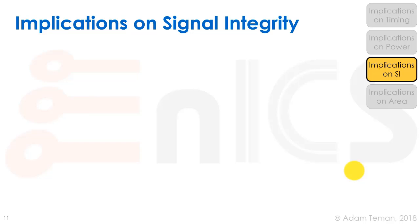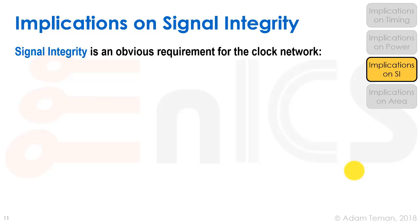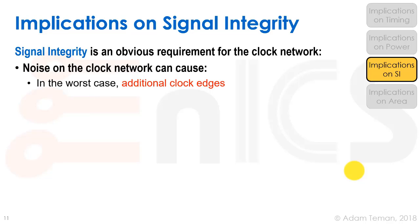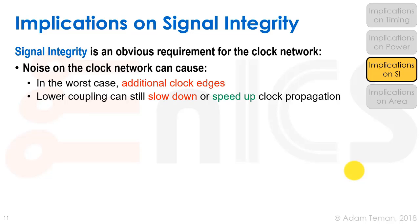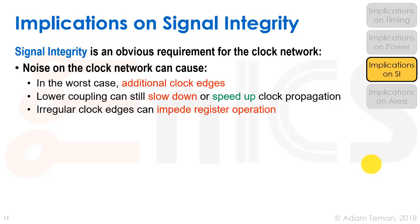Signal integrity is a critical requirement for the clock network. Noise on the clock network can, in the worst case, cause additional clock edges — essentially a blue-screen-of-death scenario with guaranteed setup or hold violations. Even lower coupling capacitance can slow down or speed up clock propagation depending on whether the aggressor signal is toggling in the same or opposite direction as the clock, affecting timing.